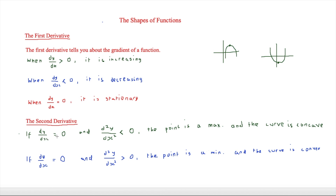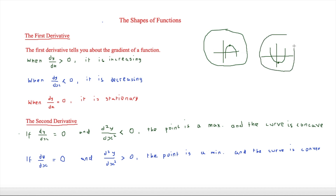If dy/dx is equal to zero and d²y/dx² is less than zero, then the point is a maximum and the curve is concave. However, if dy/dx is equal to zero and d²y/dx² is greater than zero, that means the point is a minimum and the curve is convex.